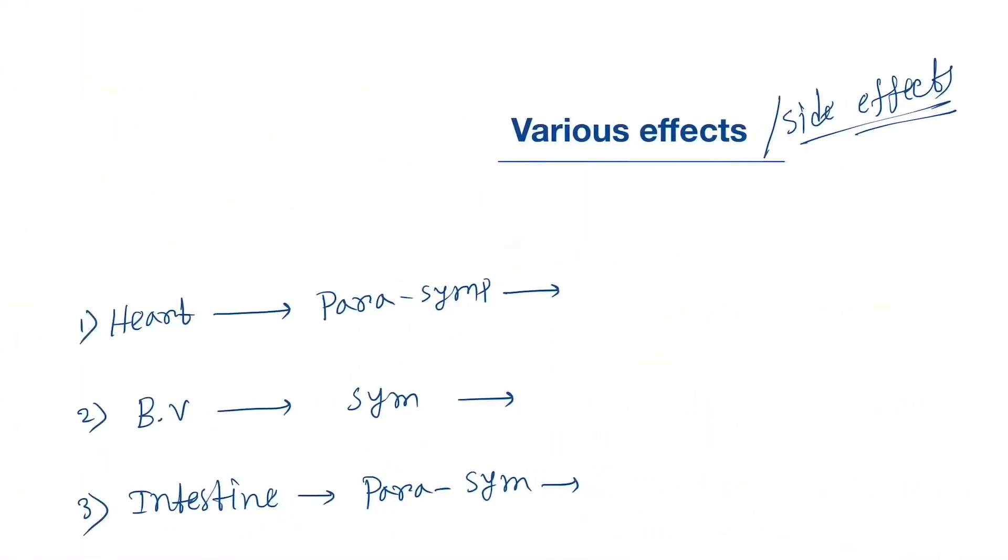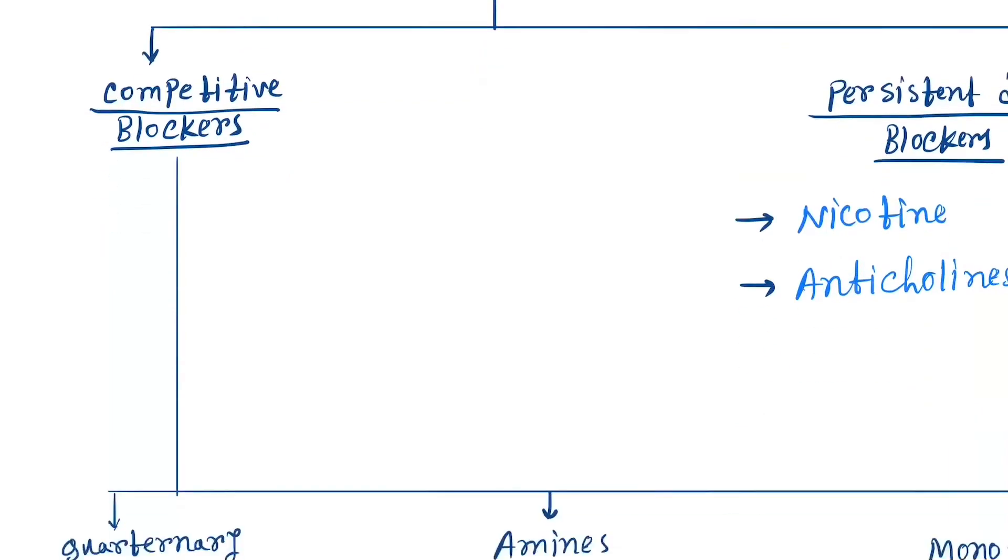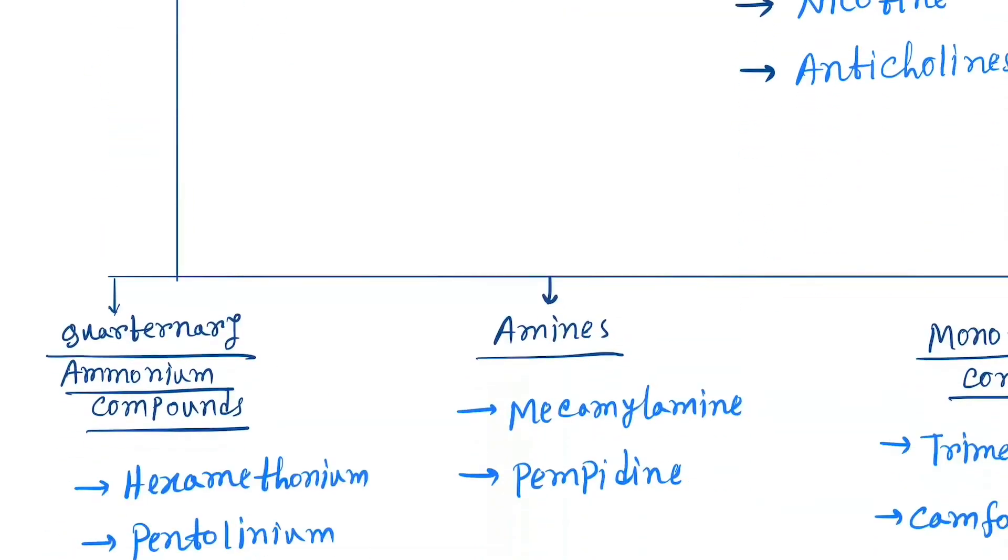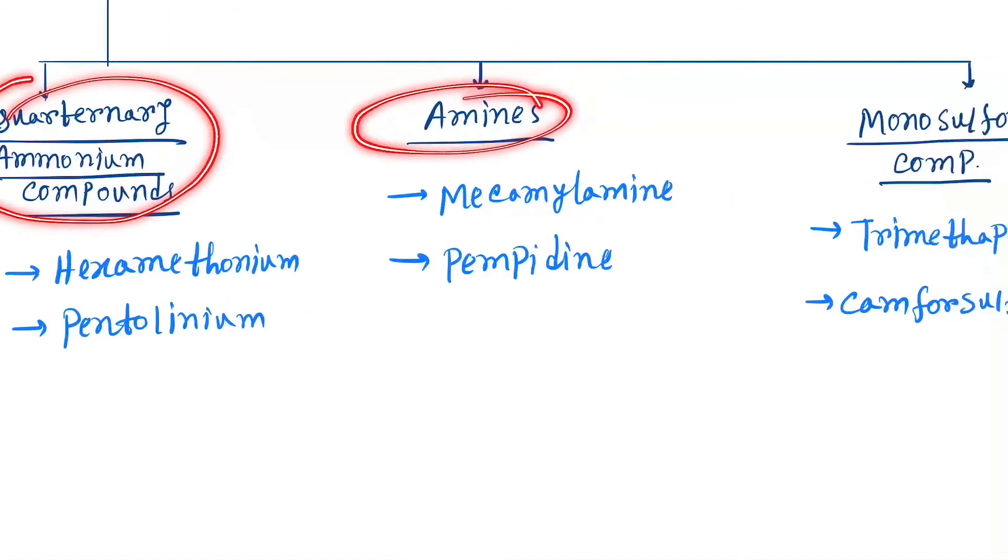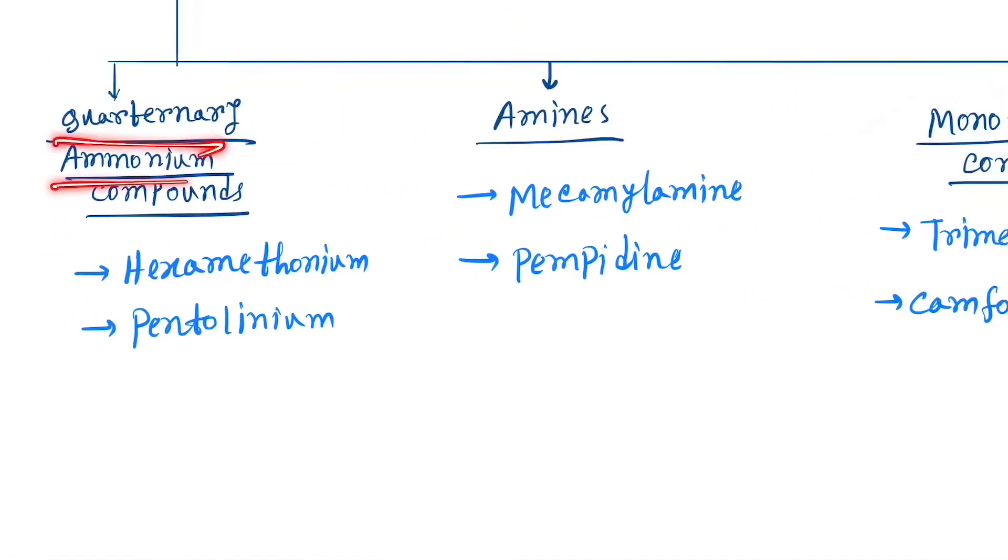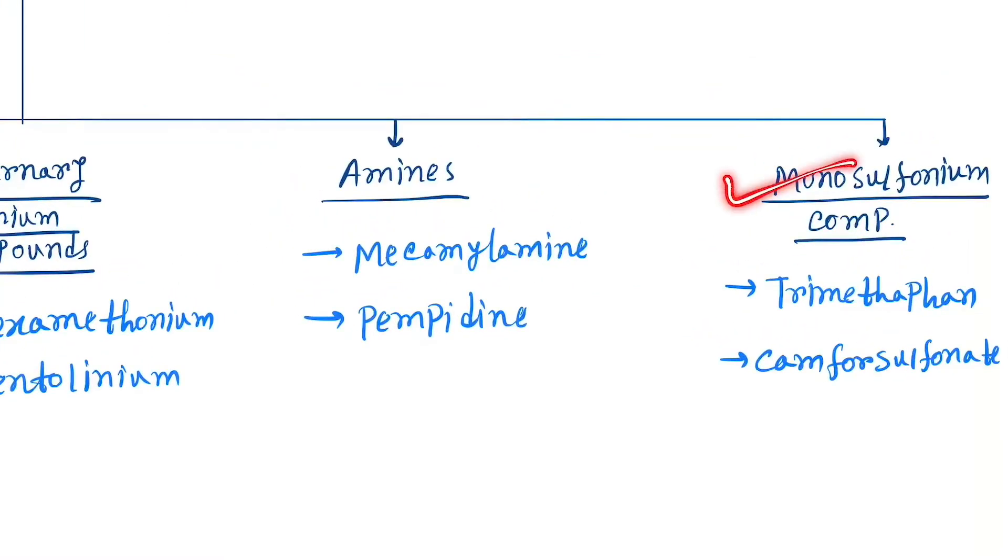drugs. First are the competitive blockers - three types: quaternary ammonium compounds, amines, and monosulfonium compounds. Quaternary ammonium compounds include hexamethonium and pentolinium. Amines are mecamylamine and pempidine. Monosulfonium compounds are trimetaphan camphorsulfonate.